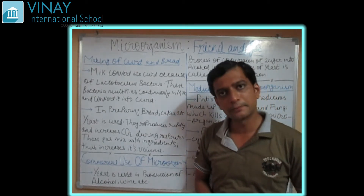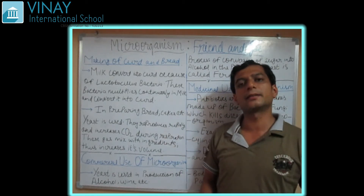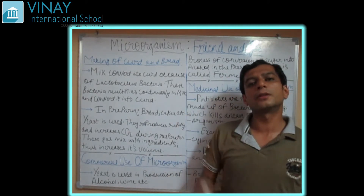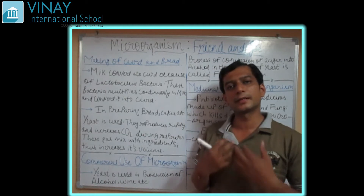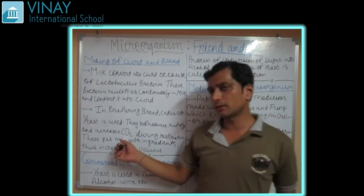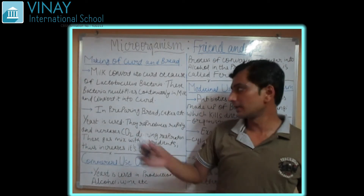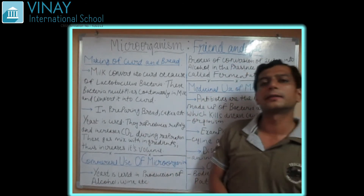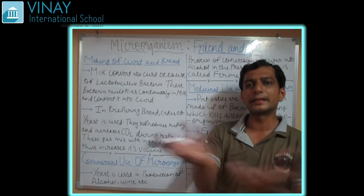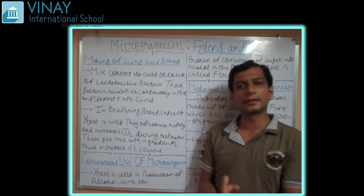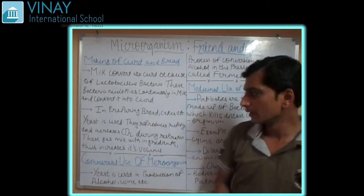As yeast reproduces, it carries out a breathing process — it takes in oxygen and breathes out carbon dioxide. This carbon dioxide mixes with your food items like bread, cake, idli, and suji. Because of this carbon dioxide gas, the food items increase in size. For example, when you prepare cake batter it is small in size, but the final cake has a much larger volume. This increase in size is because of the yeast present in it.